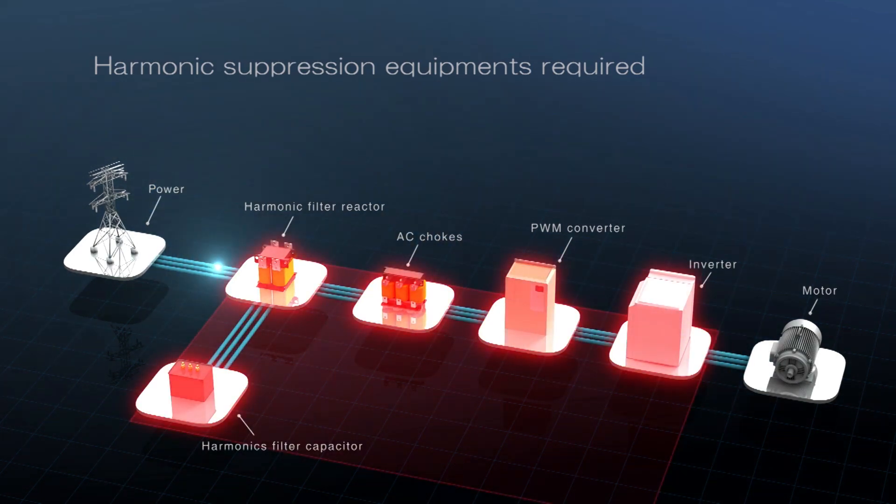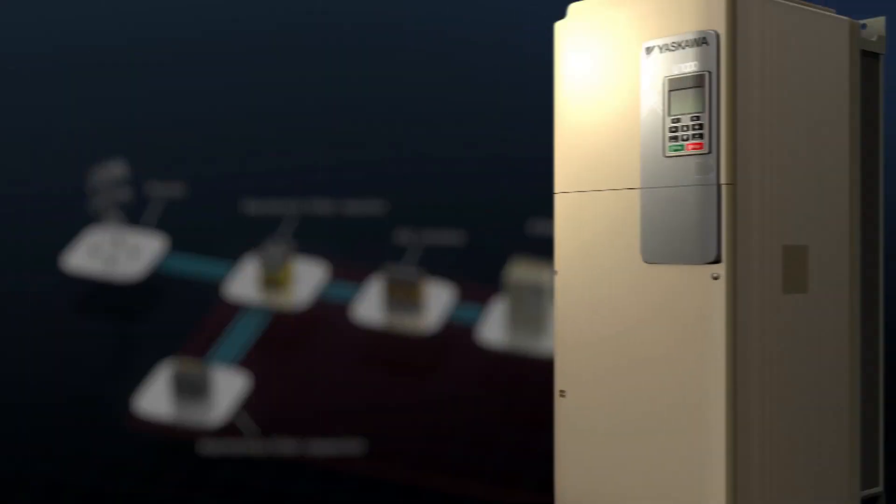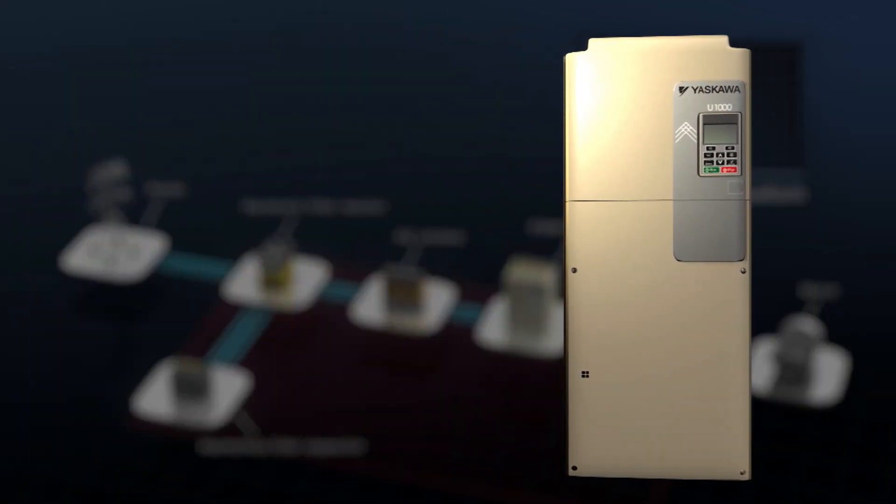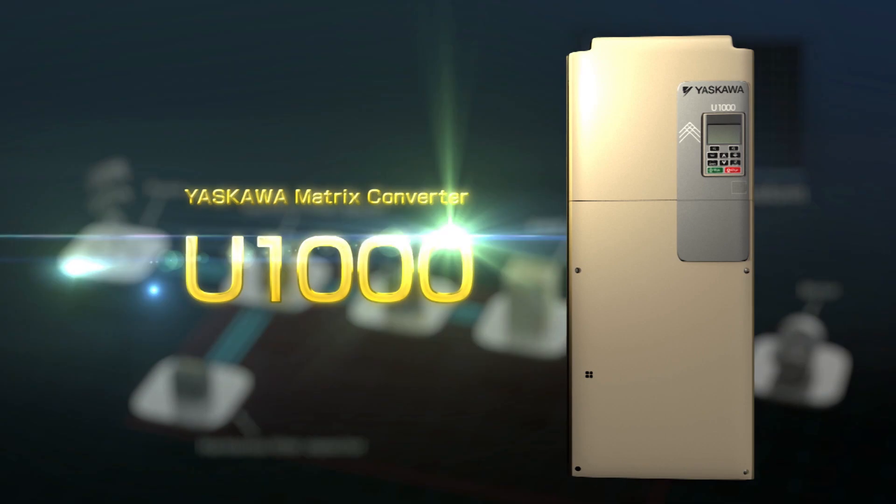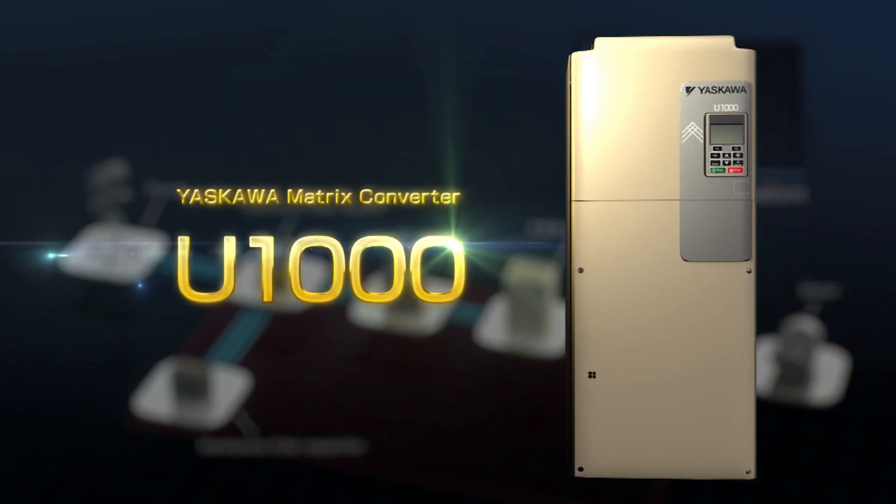Large space is required to install these external components. Yaskawa Electric provides the solution: the Yaskawa Matrix converter U-1000, using revolutionary new technology offered in a single compact component to address this space problem.